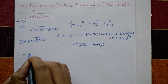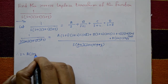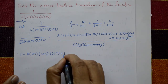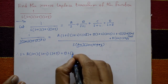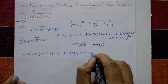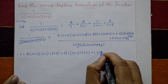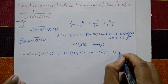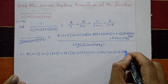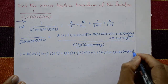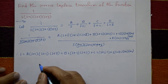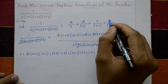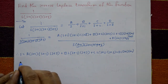Both sides have the same denominator, so we cancel it. Therefore, 1 equals A into s plus 1 into s plus 2 into s plus 3, plus B into s into s plus 2 into s plus 3, plus C into s into s plus 1 into s plus 3, plus D into s into s plus 1 into s plus 2.